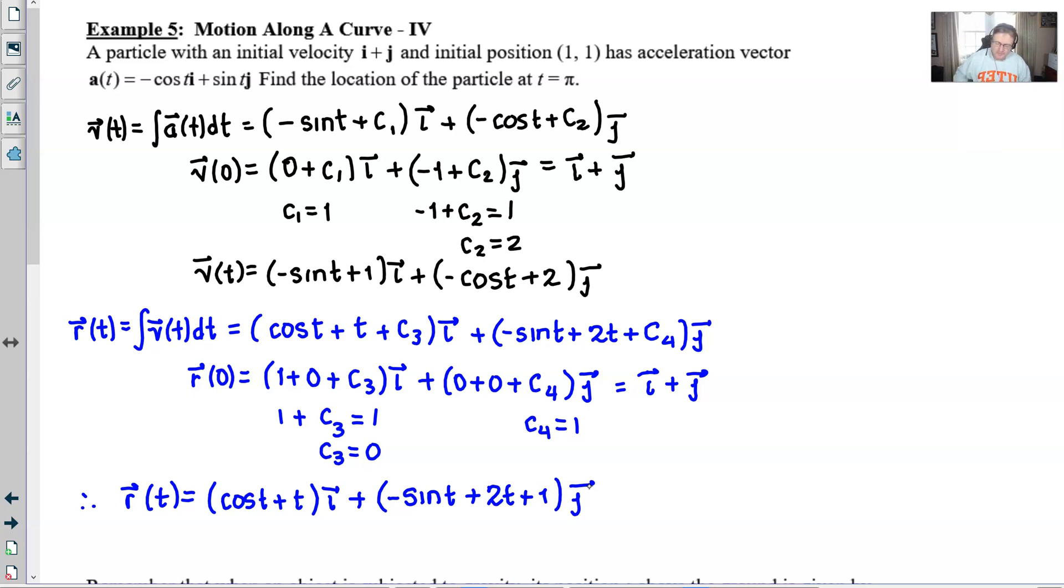Find the location of the particle at time t equal π. So if we let t equal π and we work through this, cosine of π is negative 1. We replace the t with π. We do the same thing over here. Negative sine of π, that would be 0. 2 times π, of course, is 2π. Add our 1. And then you essentially have your answer. It is perfectly acceptable to leave it like that, or if you want to give it an ordered pair, it would take on this look here.